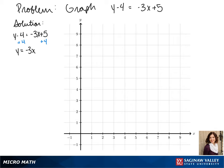So we add 4 to both sides and we get y equals negative 3x plus 9. This means that our y-intercept right here is at 0,9 and our slope would be negative 3.